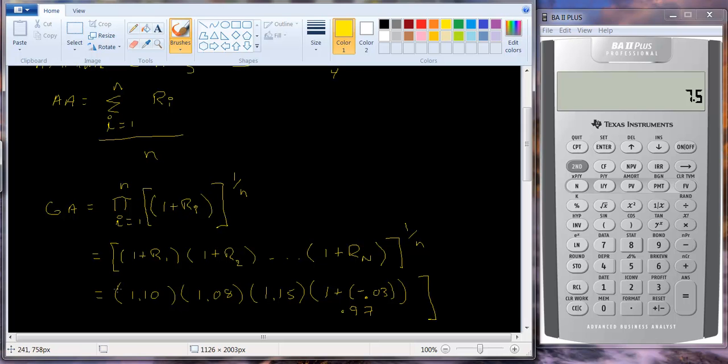And after we get that number, we're going to take the 1 over 4th power because we have 4 observations. So let's see how that looks.